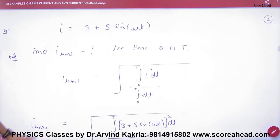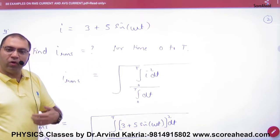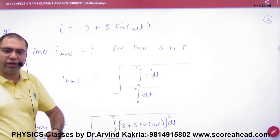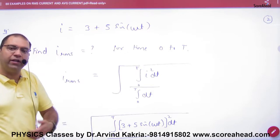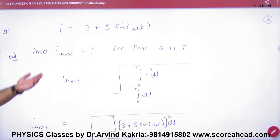Now suppose the question has I = 3 + 5 sin(ωt). This is instantaneous current, but we don't match the standard equation. What is this extra 3? To find I_RMS, there's no shortcut.